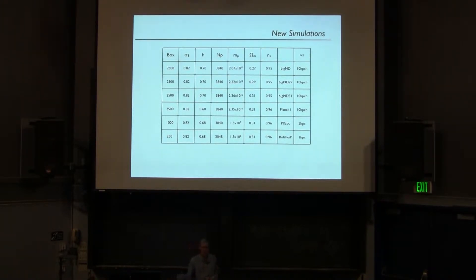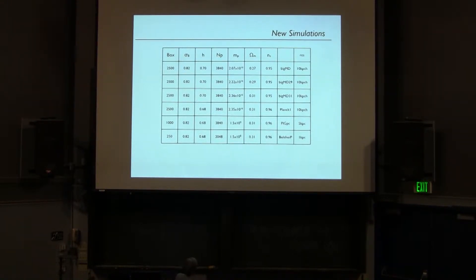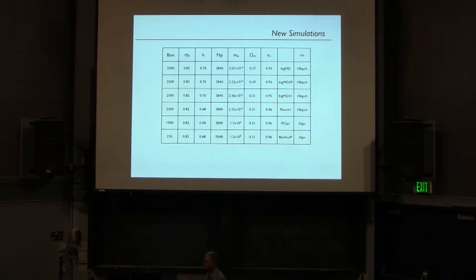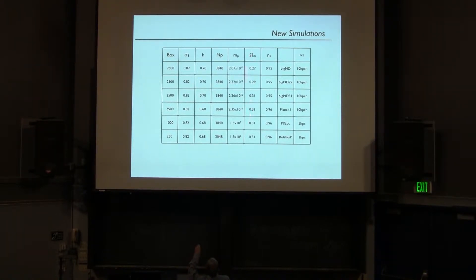This is a bit of propaganda. This is the next round of simulations — the big simulation suite which we are doing analysis with. Those will be a number of particles cubed, which is like 60 billion particles. In each simulation there's a whole set of those, and they cover different cosmological parameters, which is different from what we had before, going from W7 to Planck.